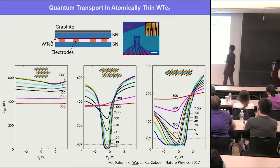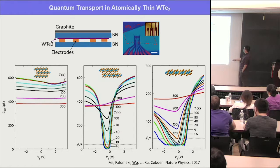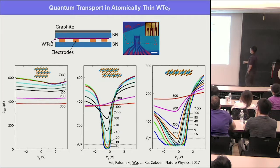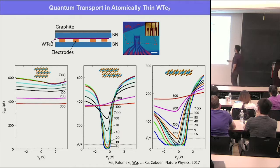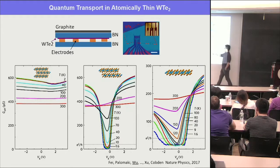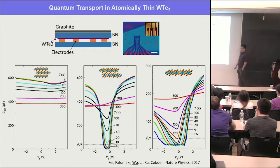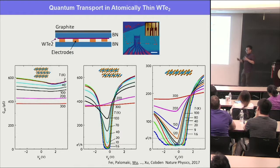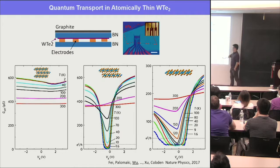In the bilayer the conductance goes to zero — full insulating state. But in monolayer it saturates at a finite value. This is exactly what you want to demonstrate: the bulk of the flake is insulating, but there are edge modes responsible for the residual current transport. The saturated conductance plateau value in this device is not quite the expected quantized value and could be due to contact or disorder issues, but it motivates us to go deeper and check if this is indeed topological insulation.